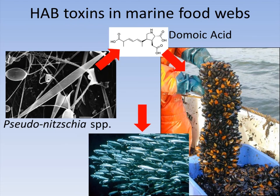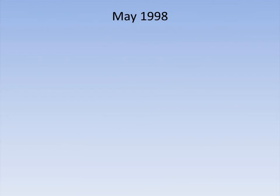During a bloom of Pseudo-nitzschia, filter-feeding organisms — like the blue mussel, a bivalve similar to a clam or oyster — concentrate domoic acid in their tissues to such high levels that it becomes poisonous to anything that eats them. Filter-feeding fish like anchovies and sardines also accumulate very high levels of this toxin during a harmful algal bloom event.